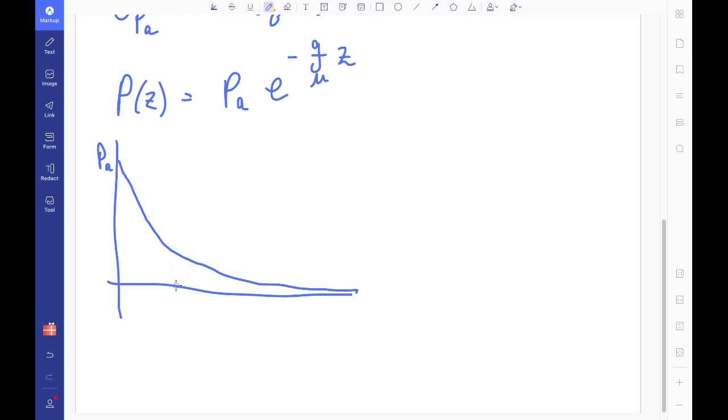And something really useful to know would be this, I'm going to call it z one half, or half height, or decay constant, which is equivalent to like your half-life in a radioactive decay. It's when your pressure drops to half the atmospheric pressure at ground level.